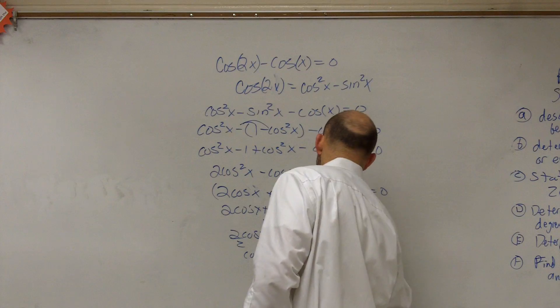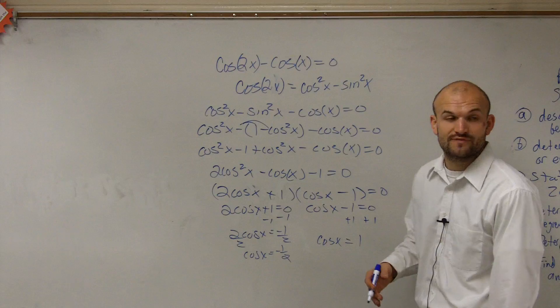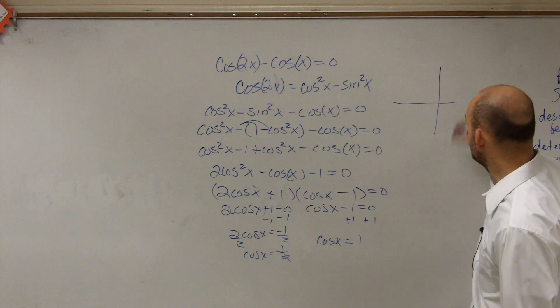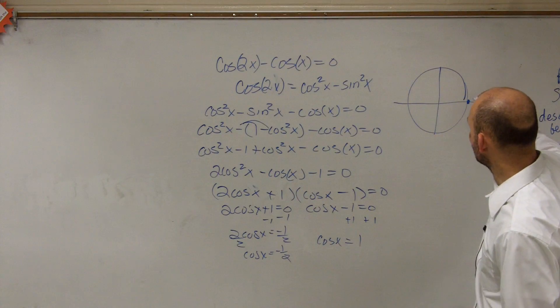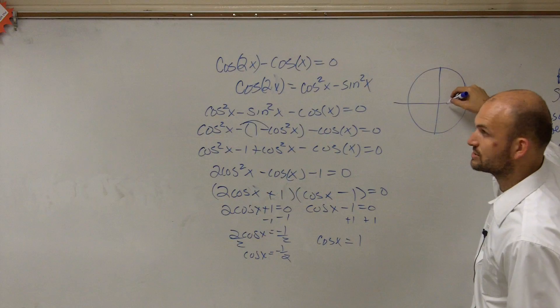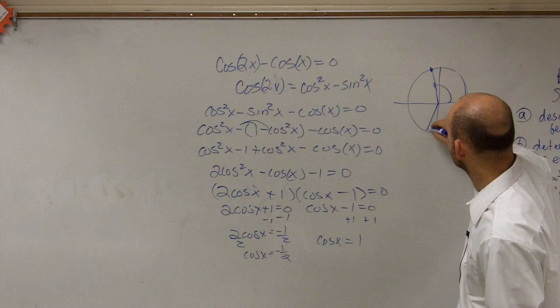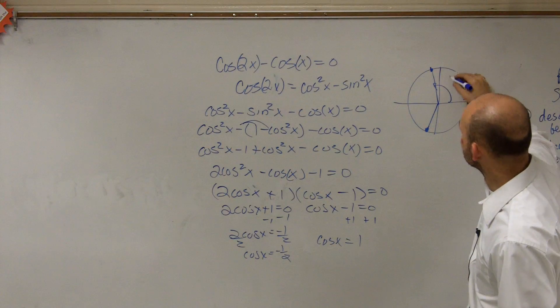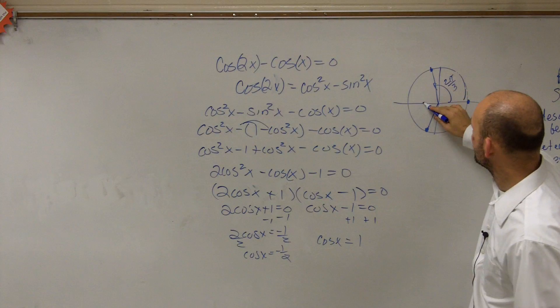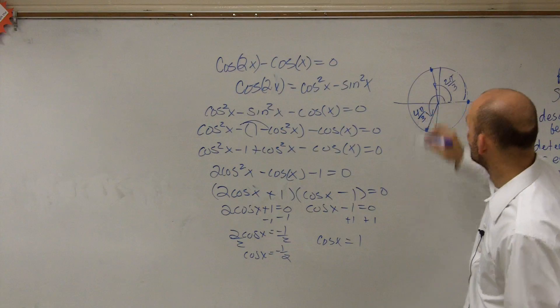Now, to evaluate for these, we're only going to evaluate, we're only finding the solutions on 0 to 2 pi, so we go back to the unit circle, say cosine is equal to 1 at our angle 0, and it's equal to negative 1 half, cosine which is the x value, so it's going to be equal to negative 1 half, at this angle, and at this angle. So this angle is 2 pi over 3, and then this angle would be 4 pi over 3.